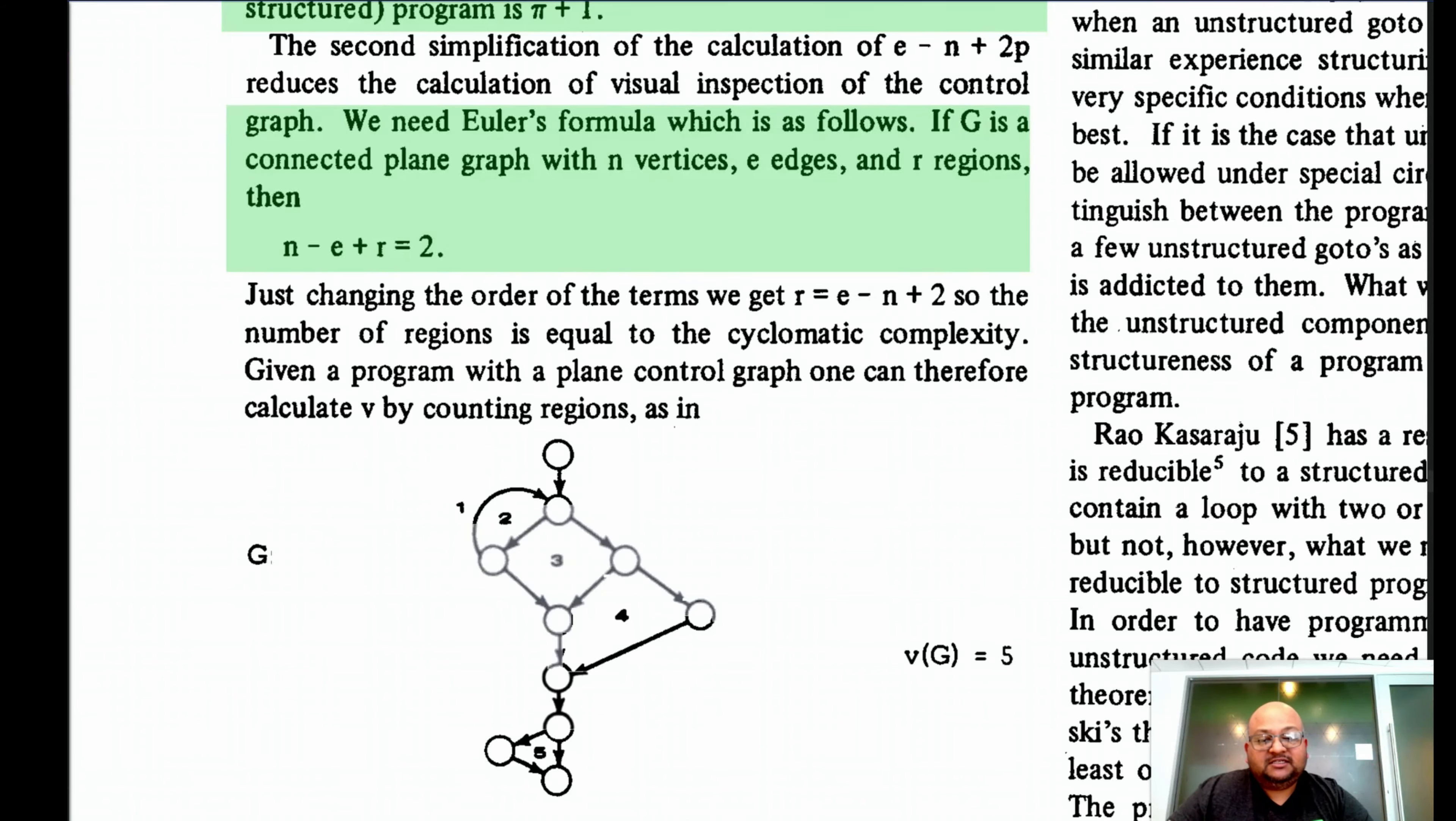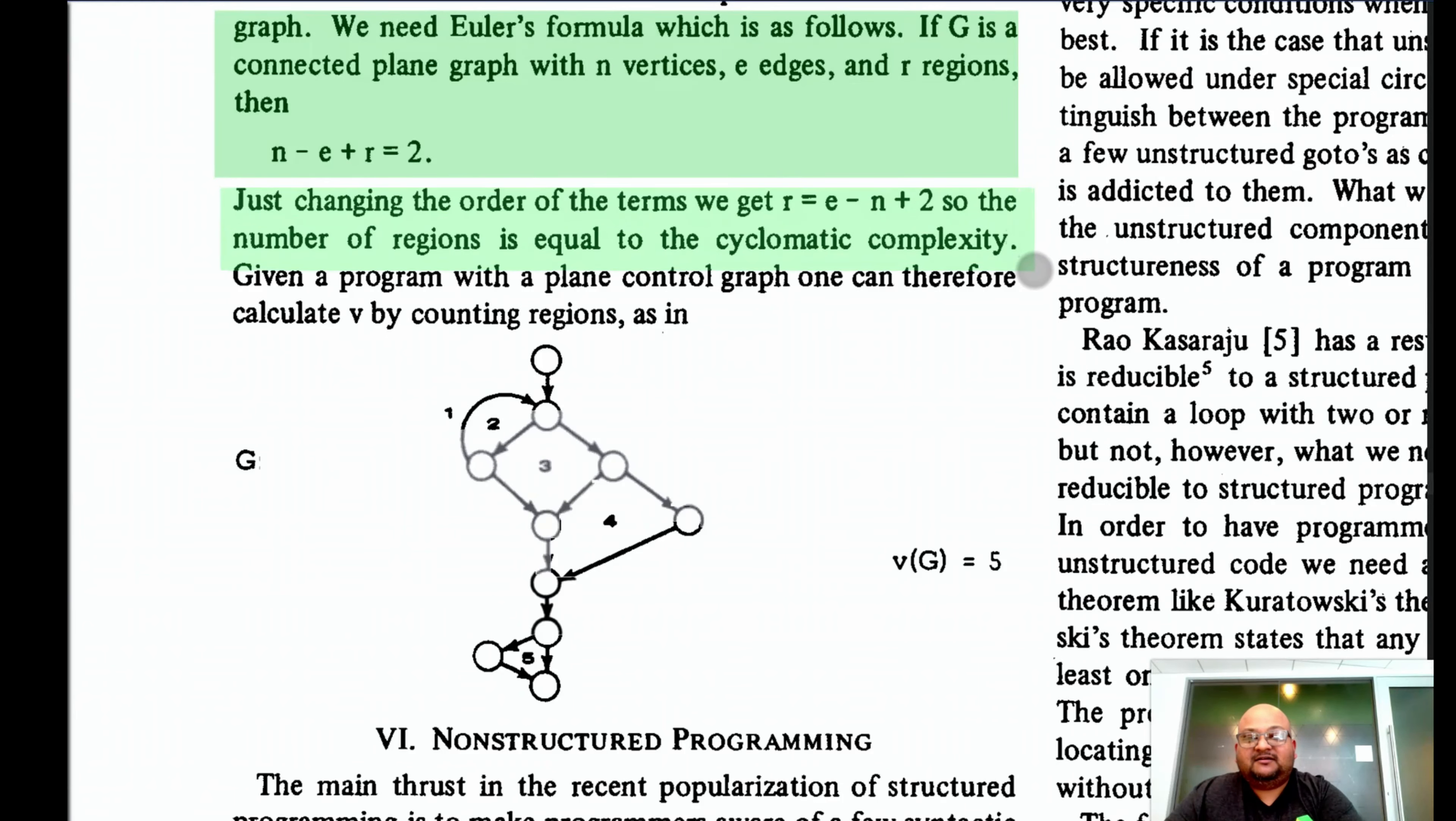And what are regions? Regions are the number of, well, regions that the graph breaks the plane into. And if we rearrange this formula, we see that the number of regions is exactly the same as the cyclomatic complexity of a graph. It also intuitively corresponds to a notion of complexity where the more edges and nodes you have in a graph, the more regions it breaks the plane into on which you're drawing it. And the more complexity it has.